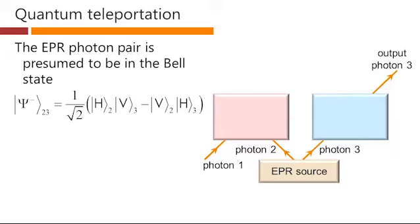For example, we could presume here that the EPR photon pair is in this particular Bell state. So note we've got labels here 2 and 3 corresponding to photons 2 and 3 here, and we've chosen a particular entangled state with horizontal and vertical polarizations in here, called psi minus 2, 3.